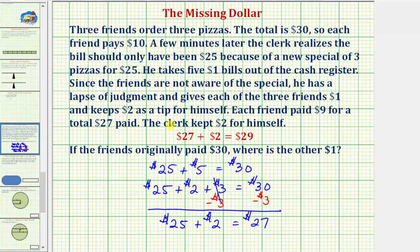The issue is, there's a problem with this equation here. These $27 here, again include the $25 for the pizzas and the $2 tip for the clerk. So if we add two dollars to this $27, notice how we're adding the tip twice, which is not what happened in this situation. So this total of $29 is meaningless in this situation because there's a flaw in the logic of forming this equation.